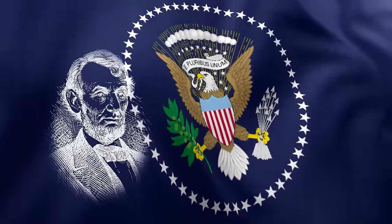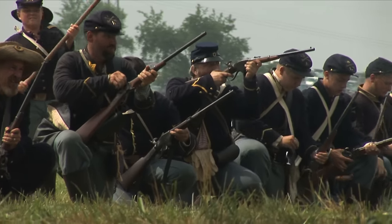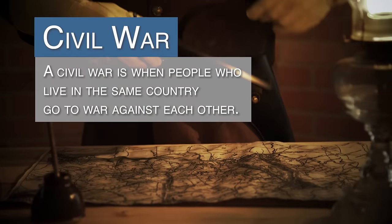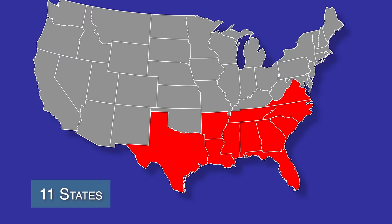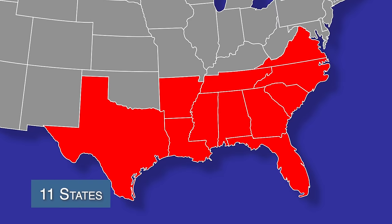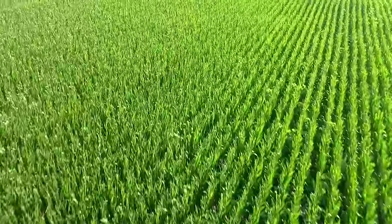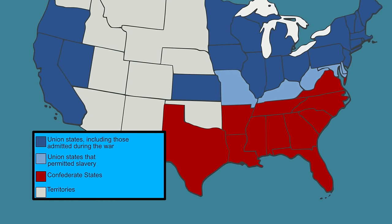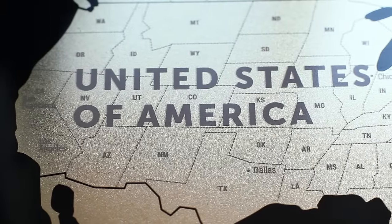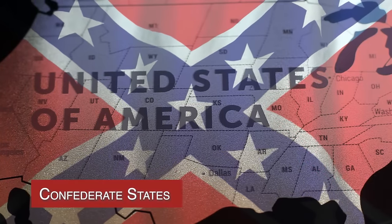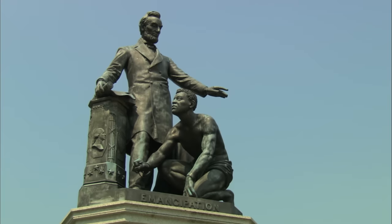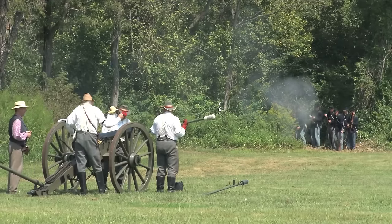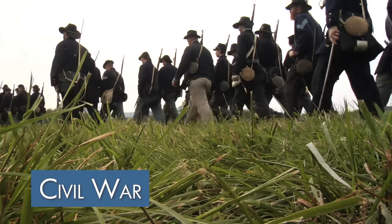Soon after Abraham Lincoln was elected president of the United States, a civil war broke out in America. Slavery was one of the biggest reasons the war had begun. A civil war is when people who live in the same country go to war against each other. Eleven southern states decided they no longer wanted to be part of the United States of America. They wanted to keep owning slaves because they depended on them to raise their crops. They made up a new name for themselves called the Confederate States, or the Confederacy. They were angry that Abraham Lincoln and others in the northern states wanted to set all slaves free. So the northern and the southern states began to fight each other. This war became known as the Civil War.